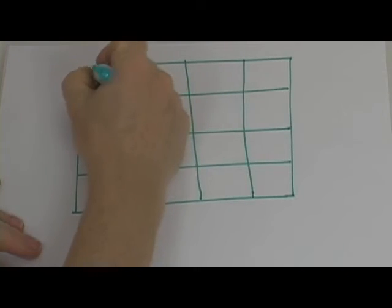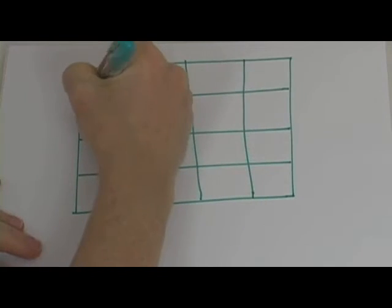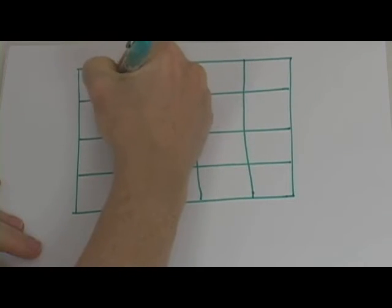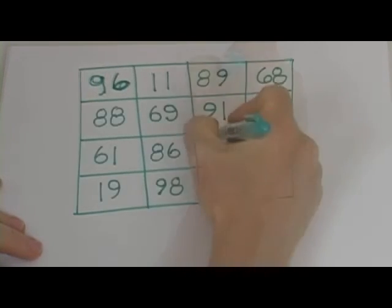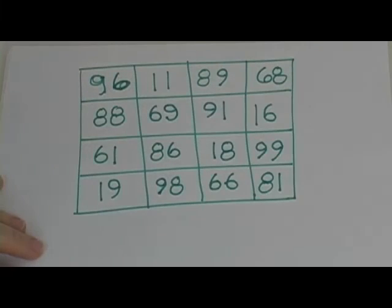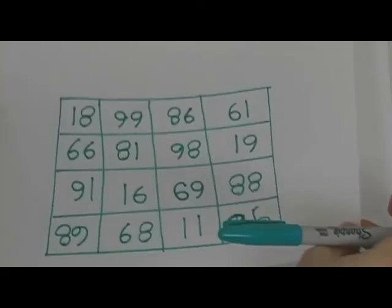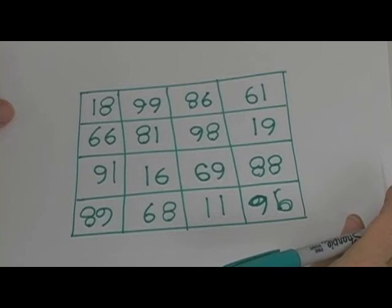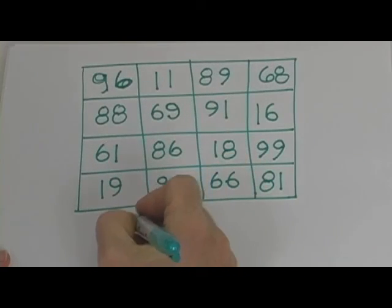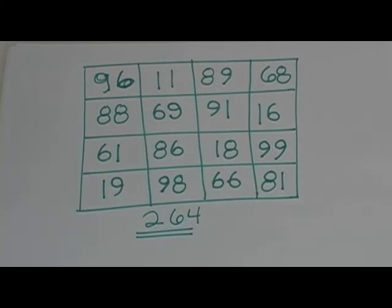What do you think the magic sum is going to be for this square? So, you may be thinking, what's so upside down about this square? Because it works both ways. Isn't that cool? By the way, the magic sum for this square is 264. Go ahead and give that a try.